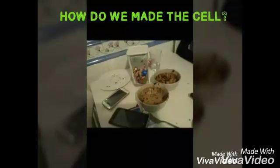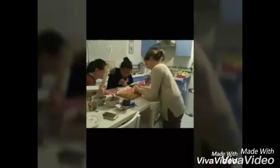Now, we are going to show you how we made our cell. First, we made the cake. Then, with fondant and sweets, we gave form to the organelles. Finally, we put them on the cake.